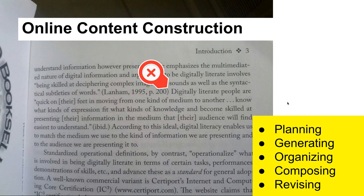I see five steps involved in online content construction, adapted from the writing process: planning, generating, organizing, composing, and revising.